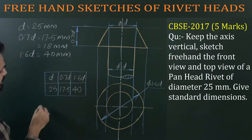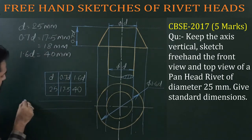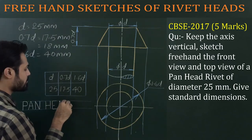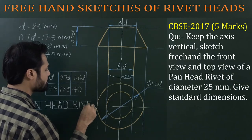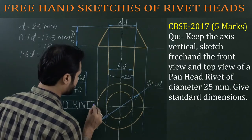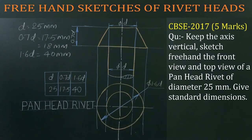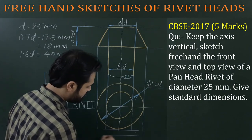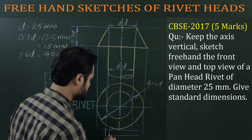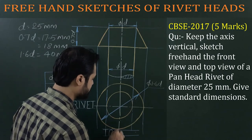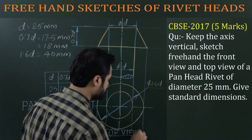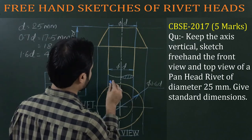After dimensioning, draw the standard dimensions table and write its heading. Also write the headings for the front view and top view labels on your drawing sheet.